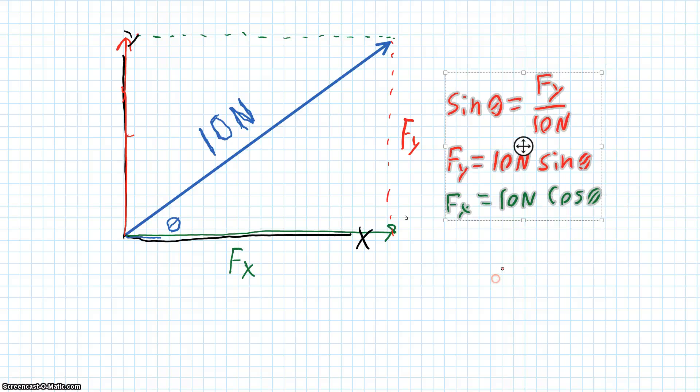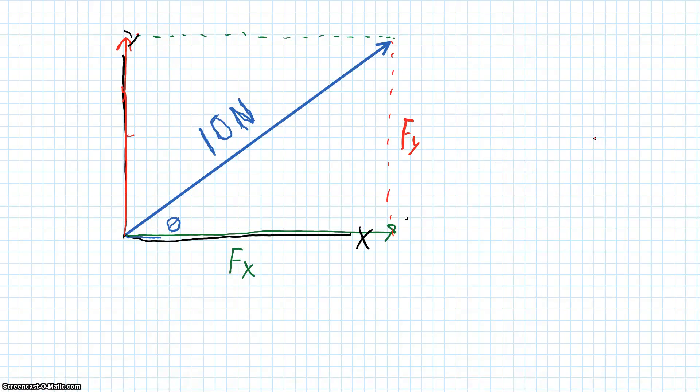This is the same thing as saying that the force in the y direction plus the force in the x direction, these are both vectors, is equal to that 10 newton vector that acts up and to the right at 30 degrees.